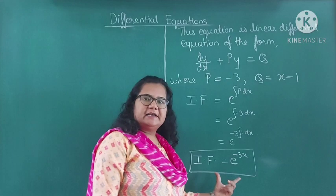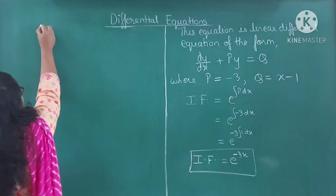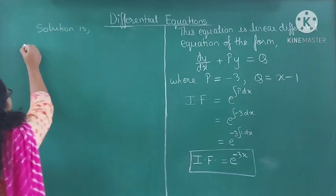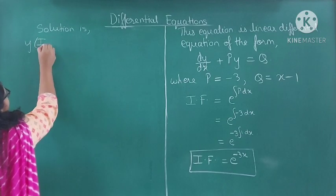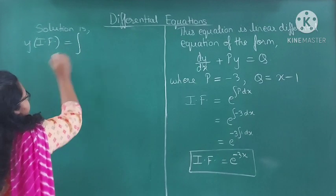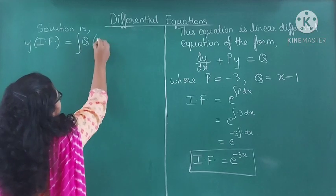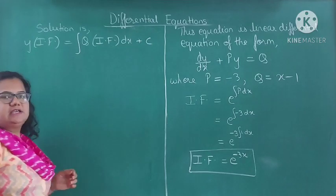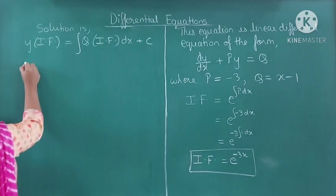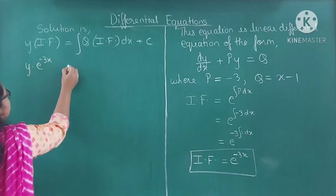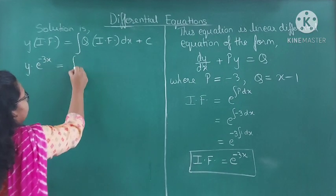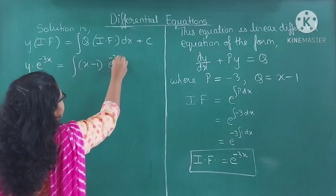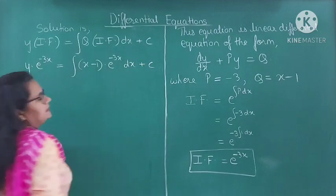After finding the integrating factor, the next step is to write the solution. The solution is: y into integrating factor equals integration of Q into integrating factor dx plus C. Now we substitute the integrating factor: y into e raised to minus 3x equals integration of (x minus 1) into e raised to minus 3x dx plus C.